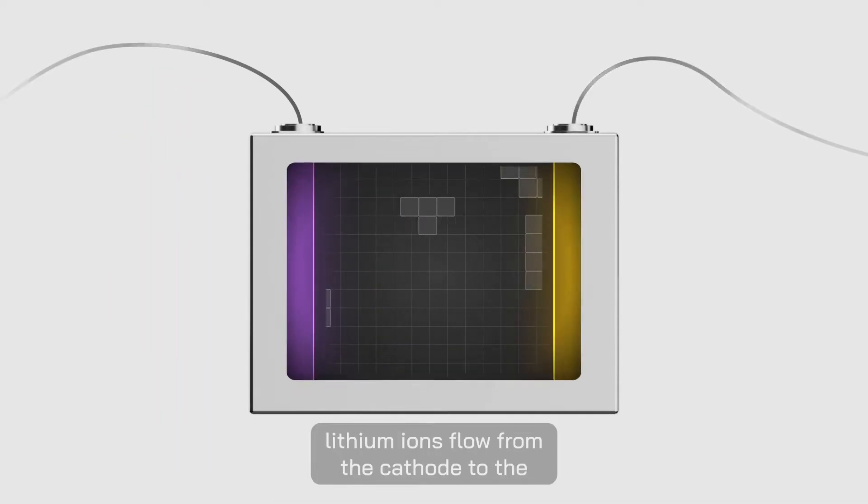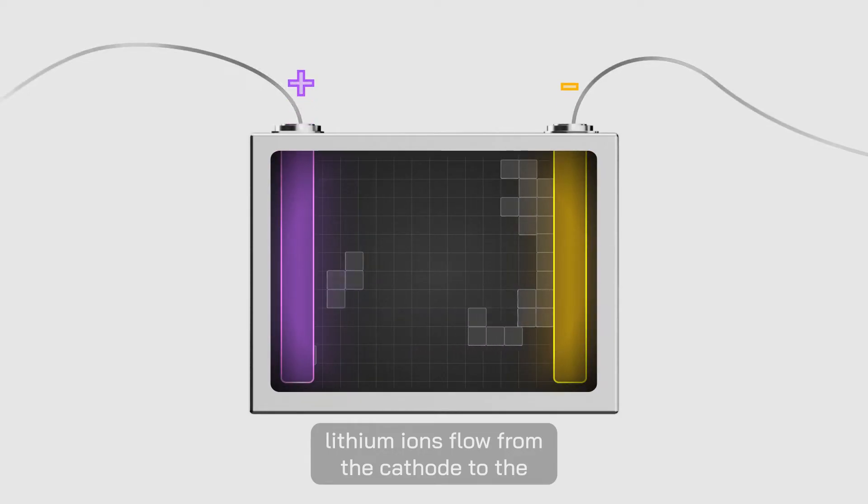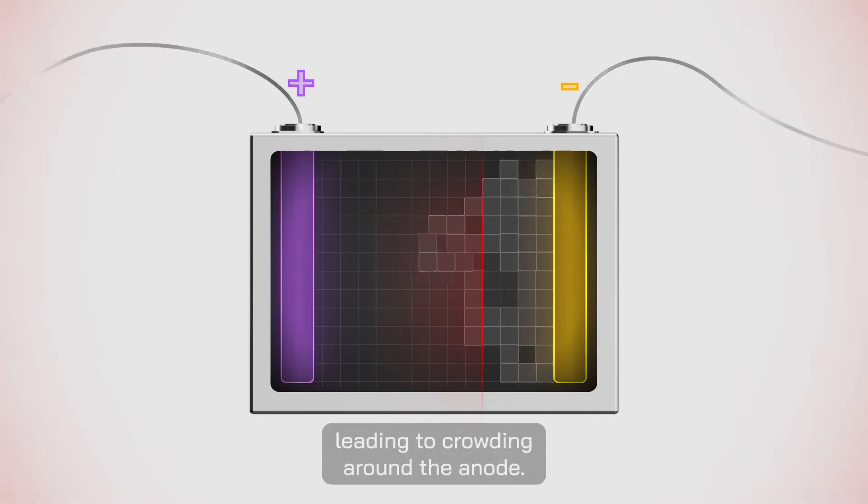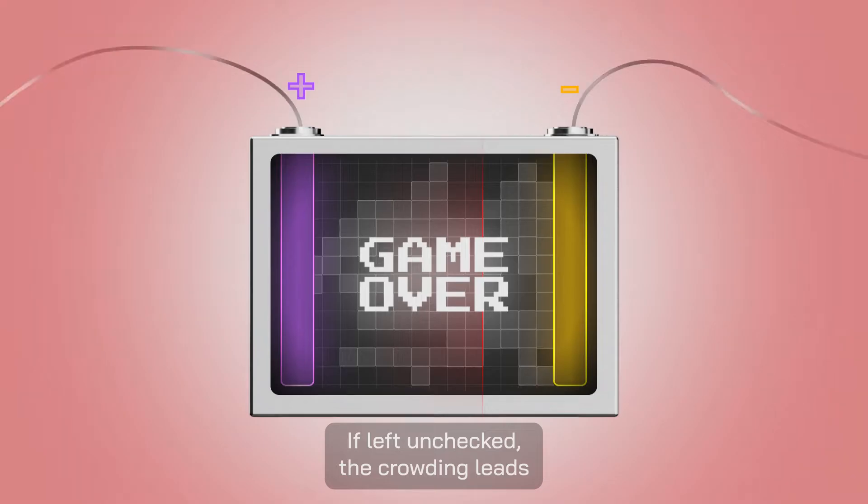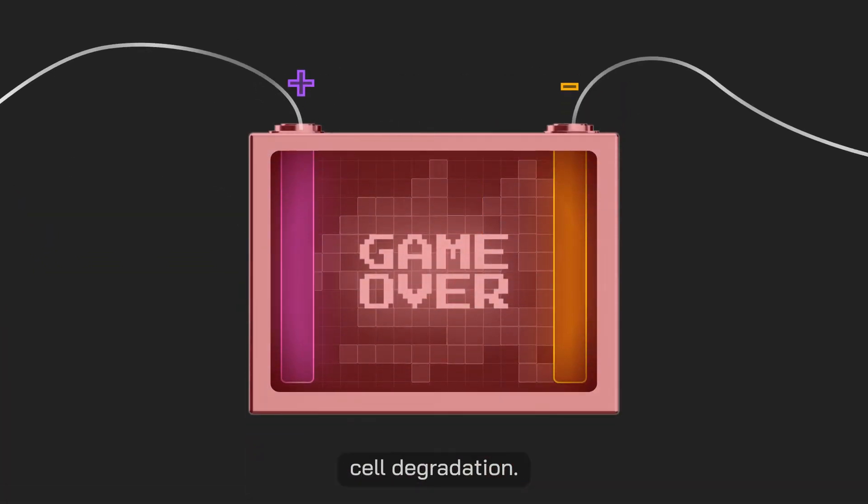When charging a cell, lithium-ions flow from the cathode to the anode and get absorbed. The faster you charge, the more ions flow, leading to crowding around the anode. If left unchecked, this crowding leads to lithium plating, resulting in significant cell degradation.